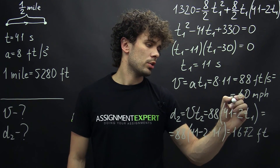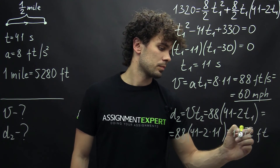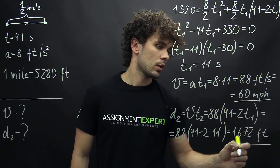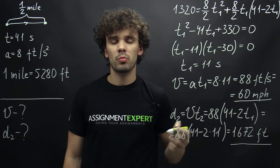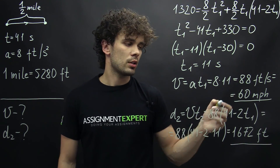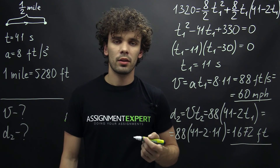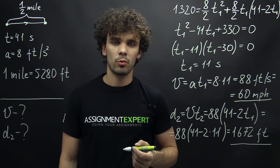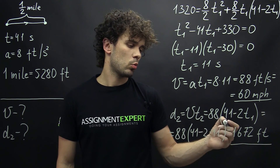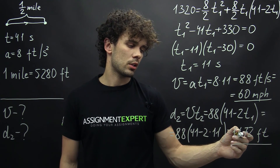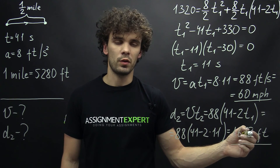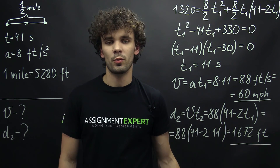So here is the answer. The maximum speed of the train is 60 miles per hour, and the distance it covers with this speed is 1,672 feet. Thanks for watching.